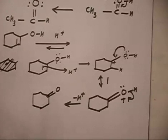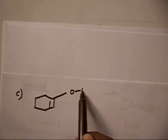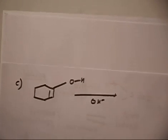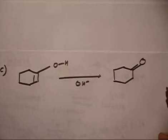In both cases the mechanism is very similar: first, attack of H+ on the alkene to form a carbocation; then loss of H+ to give the ketone. Now let's do the same reaction but in basic medium. We have the cyclic vinyl alcohol, the base is OH minus, and the final product is cyclohexanone.